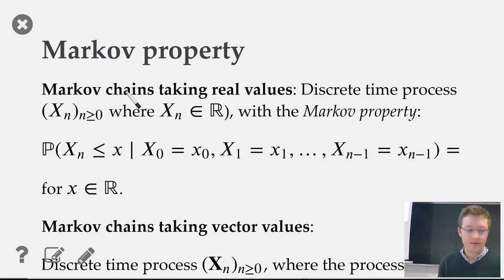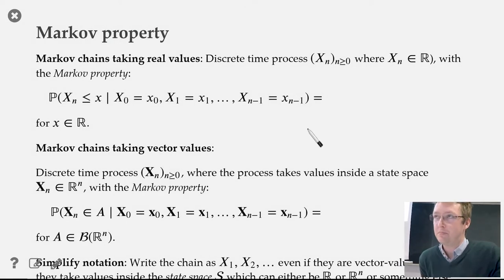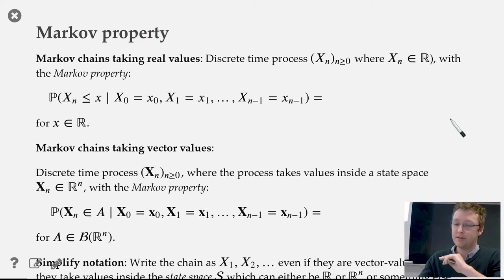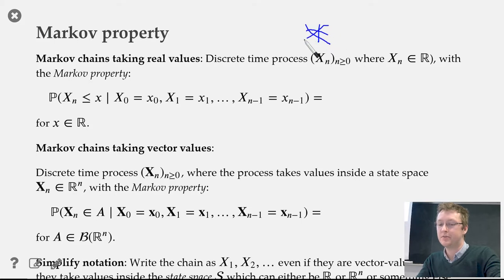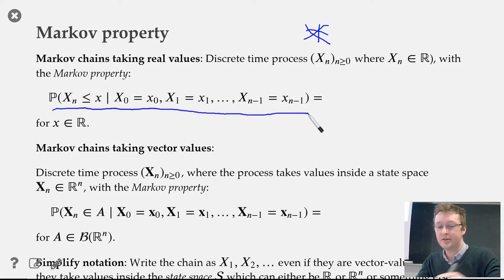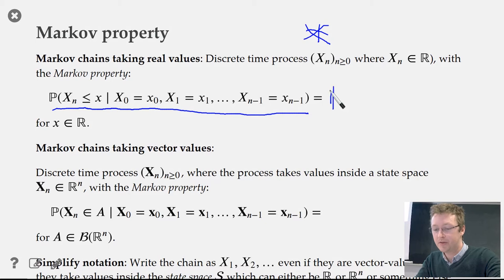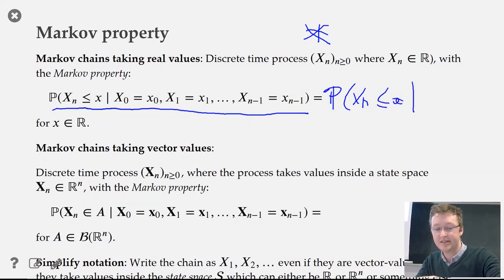Today we look at the theory of why MCMC actually works. With this kind of Markov chain, if we're only working in one dimension, a Markov chain is any stochastic process with the Markov property: the probability about the process at time n, given its full history from time 0 to n minus 1, depends only on what happened in the last time step — that is, x_n given x_{n-1}.